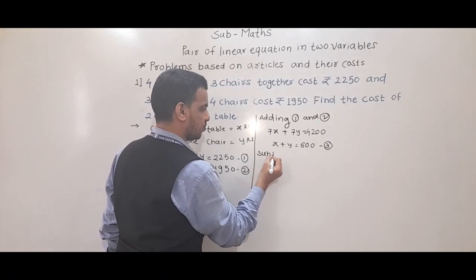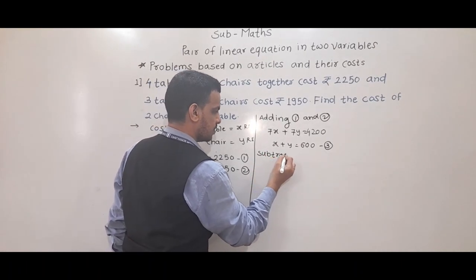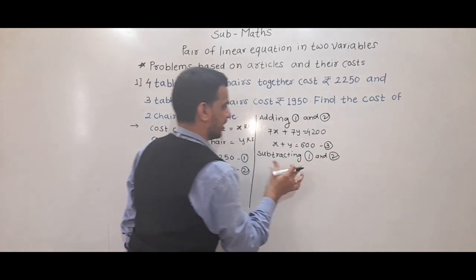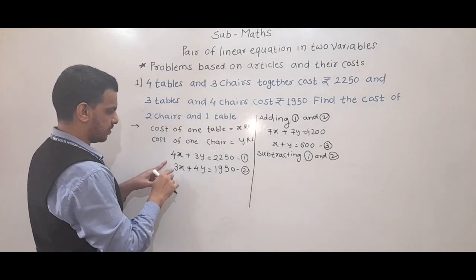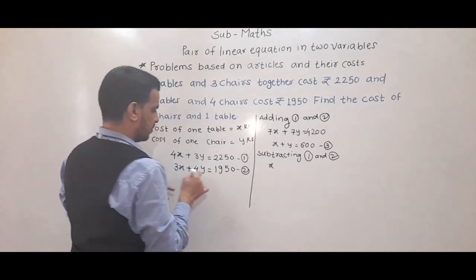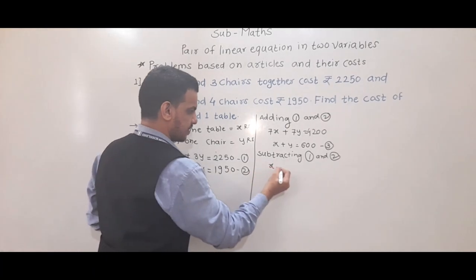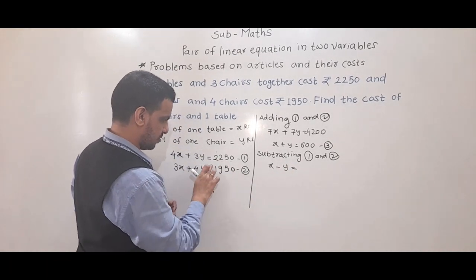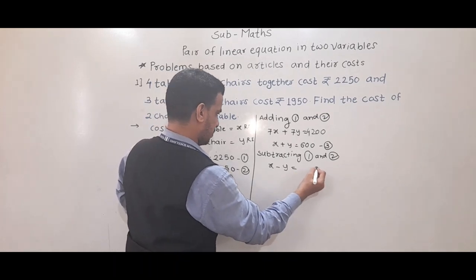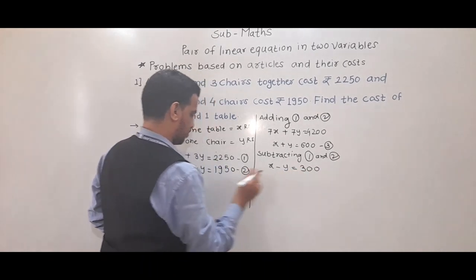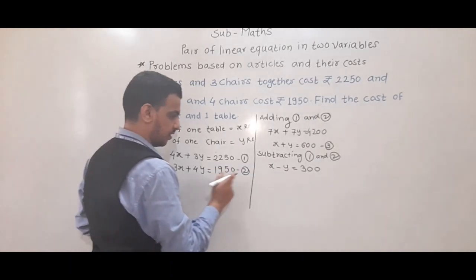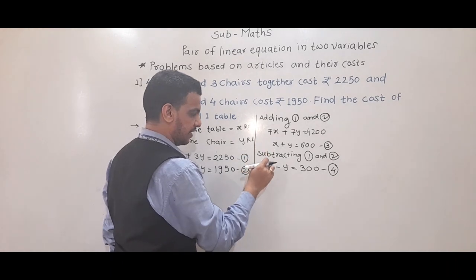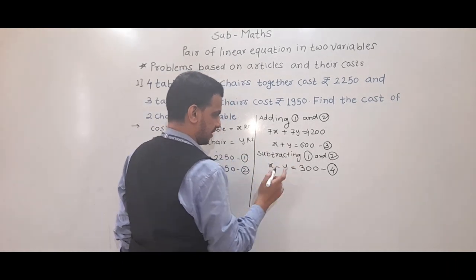Subtracting equation 2 from equation 1: 4x minus 3x gives x, 3y minus 4y gives minus y, and 2250 minus 1950 gives 300. So we get x minus y equals 300. This is equation 4.